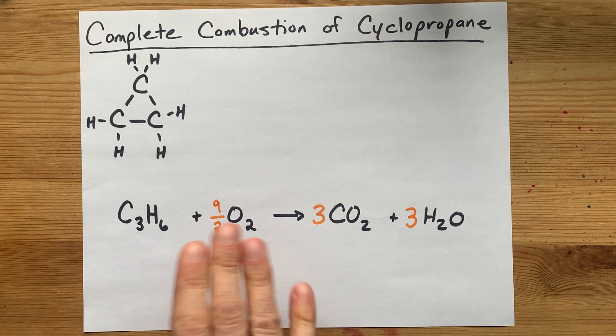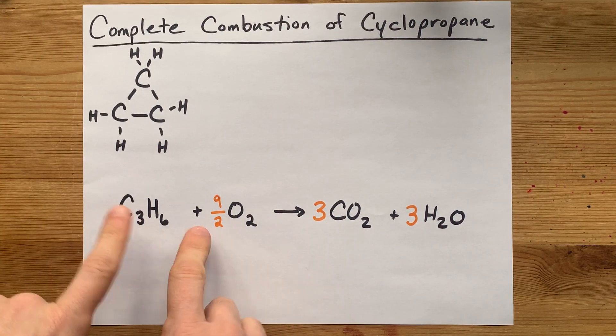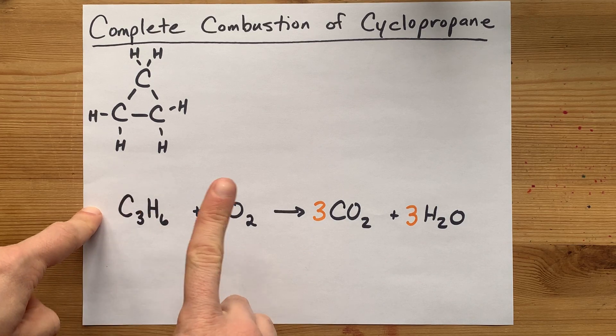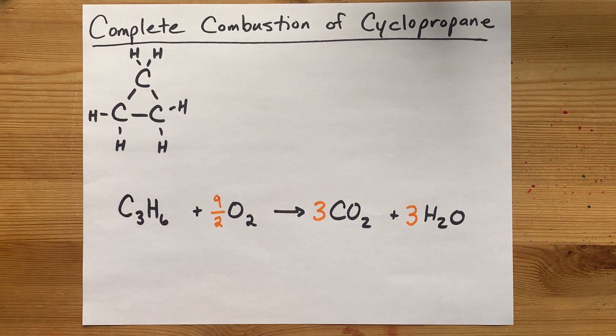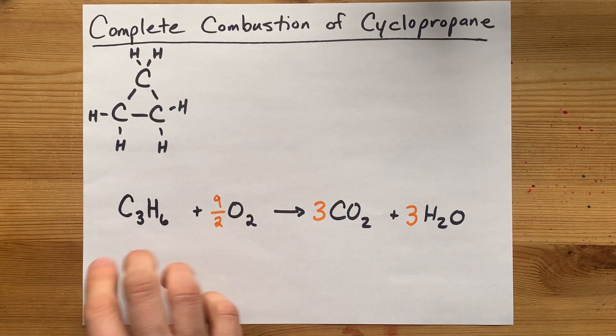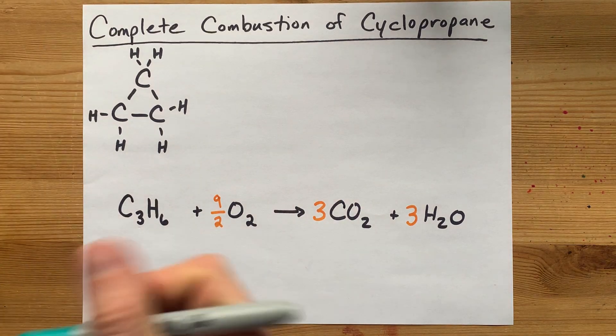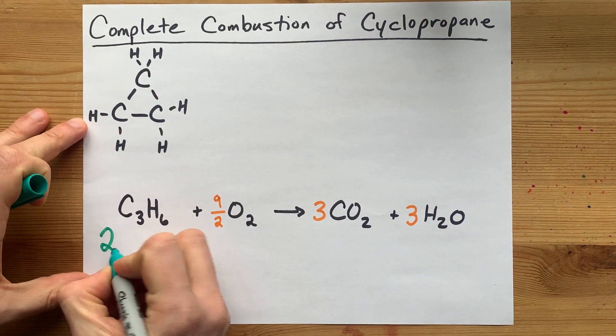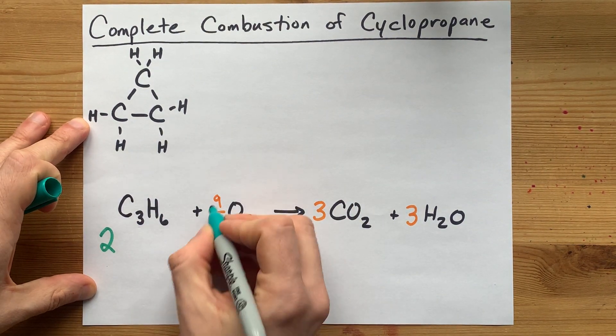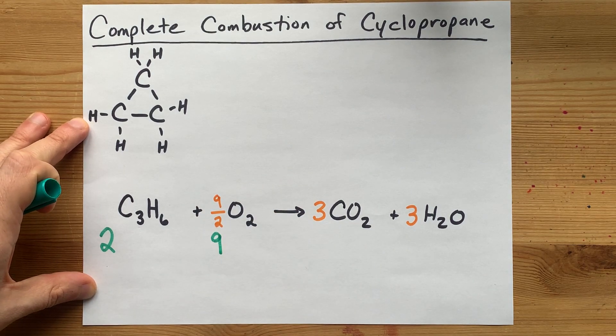But if you don't need the fractions, like if you don't have to fix this coefficient to be one like you would for enthalpy of combustion, your other option is to simply double all of these numbers. You could say that you have two cyclopropanes. Double that requires nine oxygens.